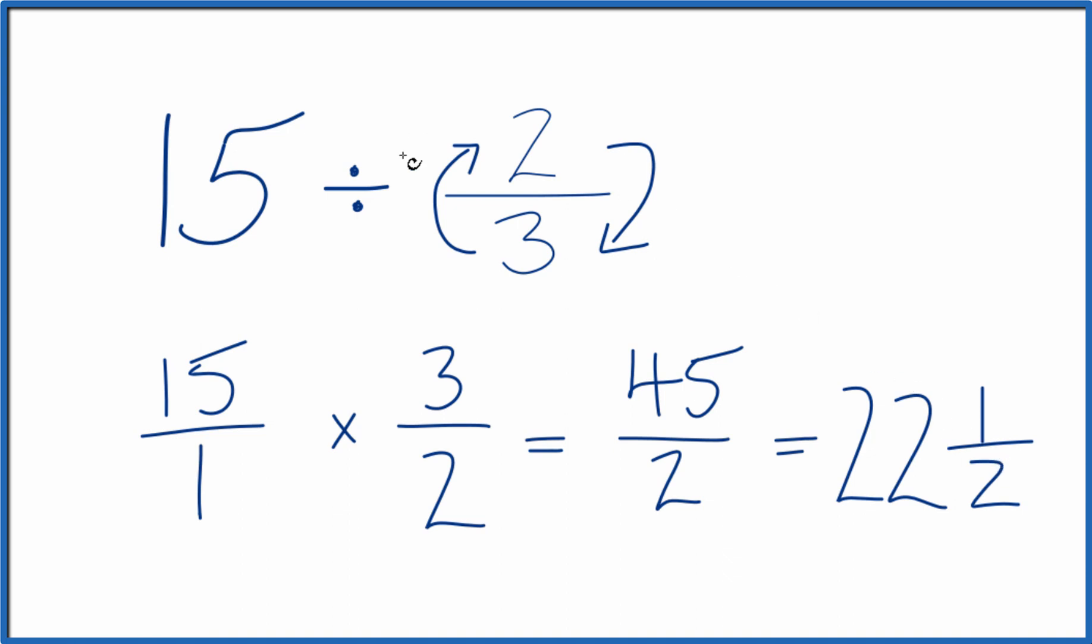So in answer to our question, when we divide 15 by 2 thirds, you can say we get 45 over 2. Or if you want to have a mixed number, 22 and one half.